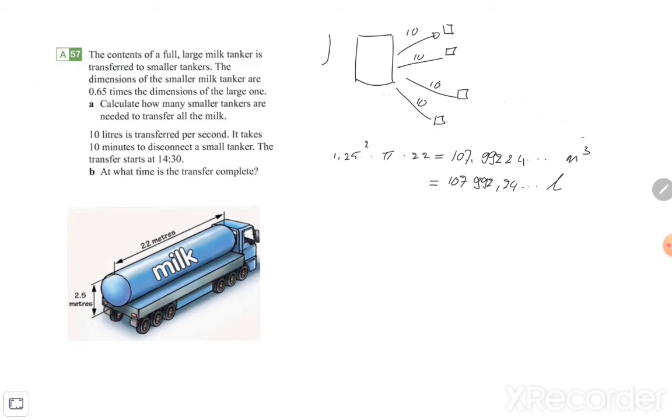To know how many seconds it will take, we need to divide our answer with 10, because it will take 10 liters transfer per second. So in that case the comma will move 1 place to the left. 107,992.24 etc. seconds.